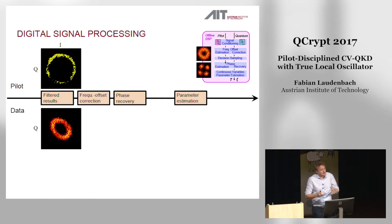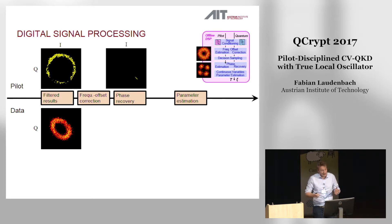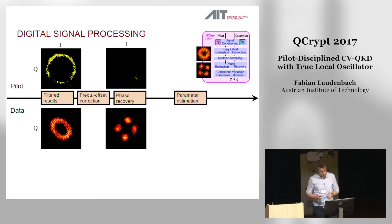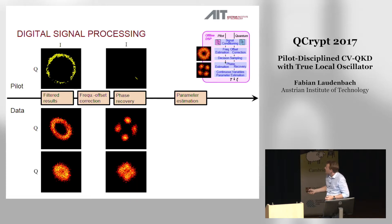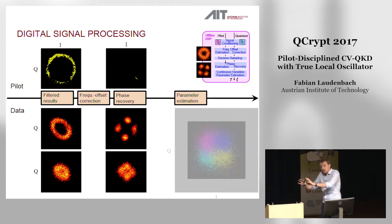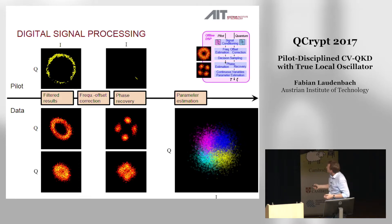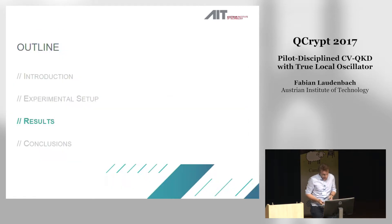Then comes the digital signal processing. Bob first performs a raw measurement in an arbitrary phase, then estimates the frequency offset and the relative phase, and then uses this information to back-rotate the quantum signals he measures to recover Alice's symbols. This corresponds to a high-SNR measurement. With low SNR, the phase recovery and frequency offset correction don't seem to make much of a difference. However, when we correlate the data sent by Alice with the measurements that Bob made, we can nicely recover the modulation of Alice's symbols.